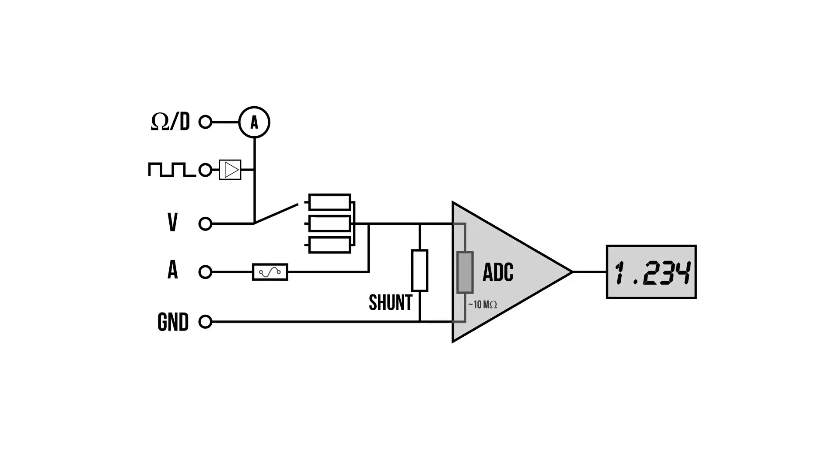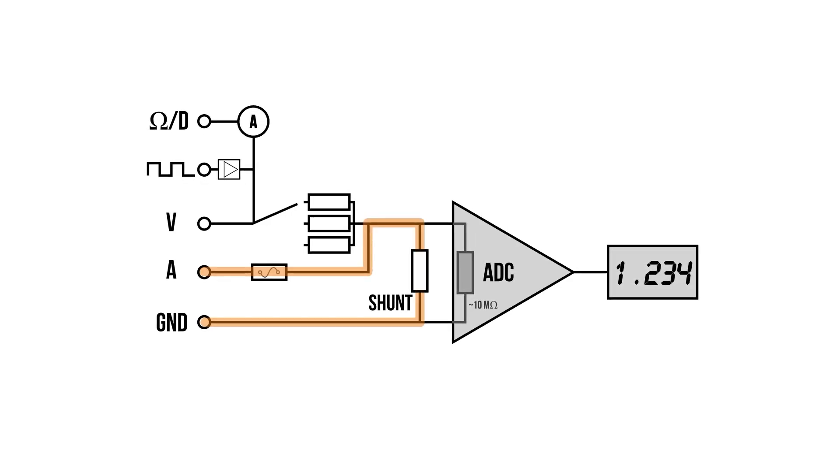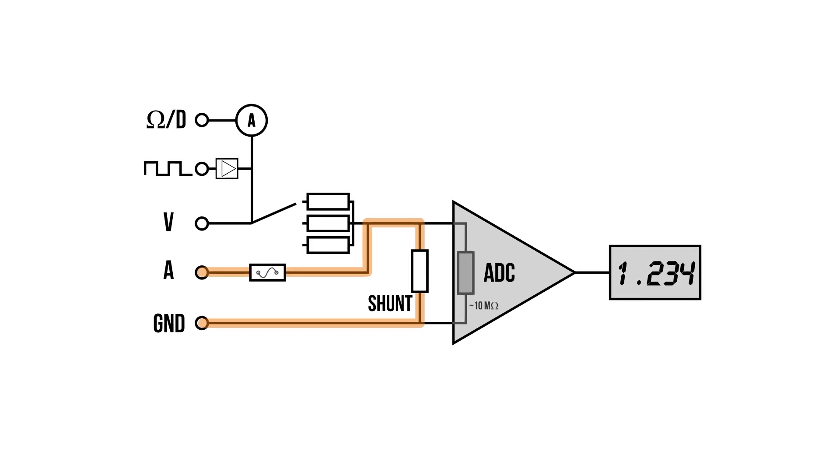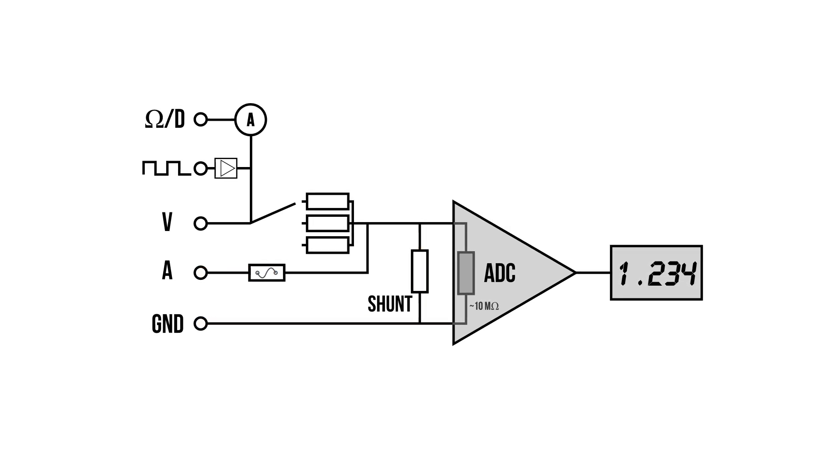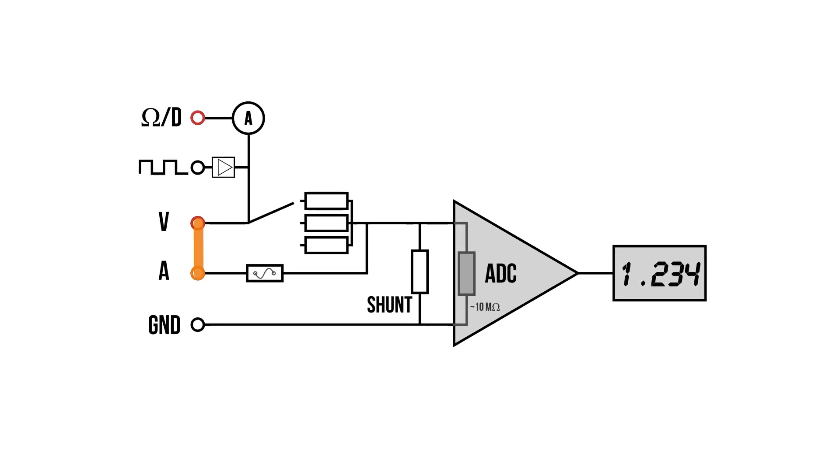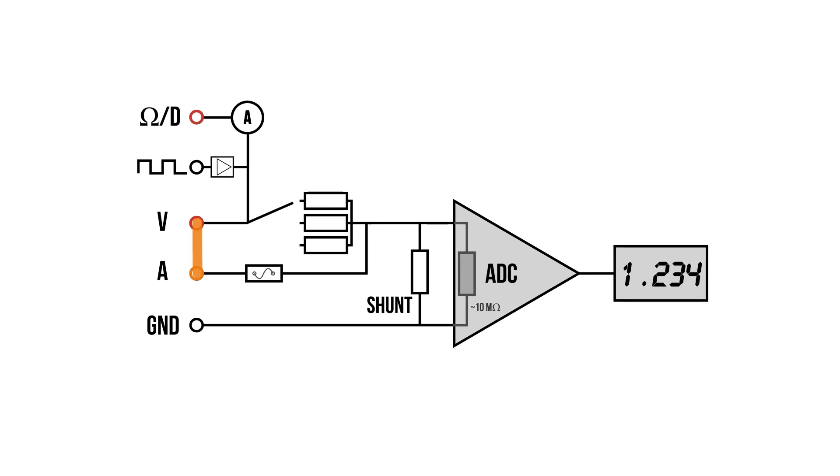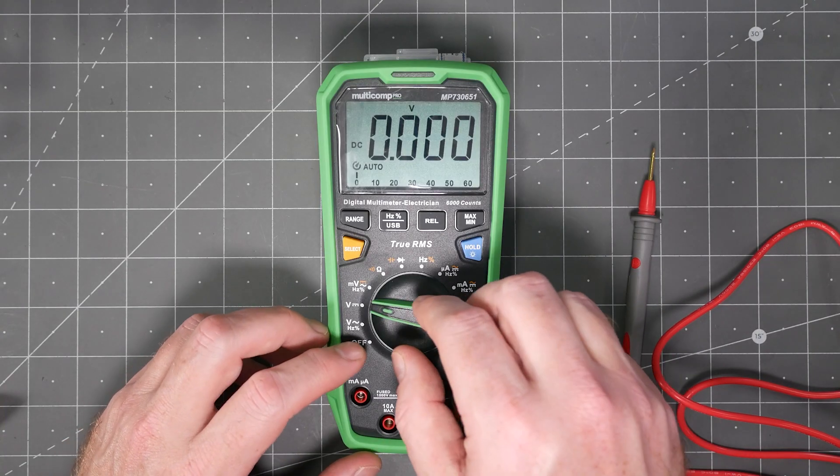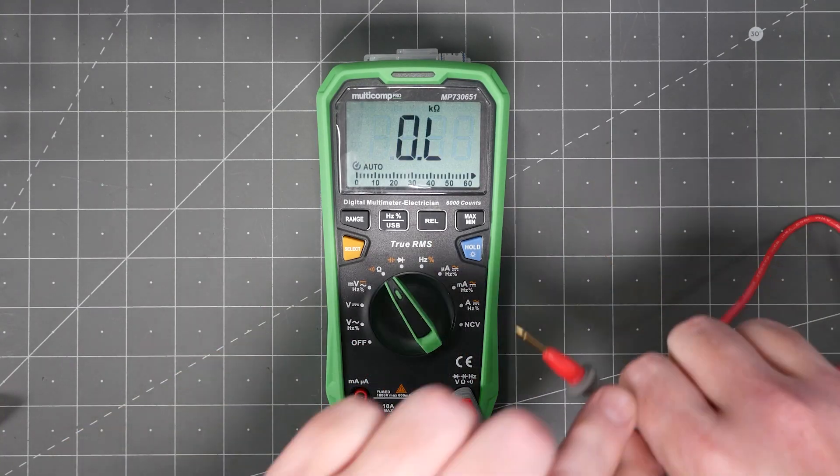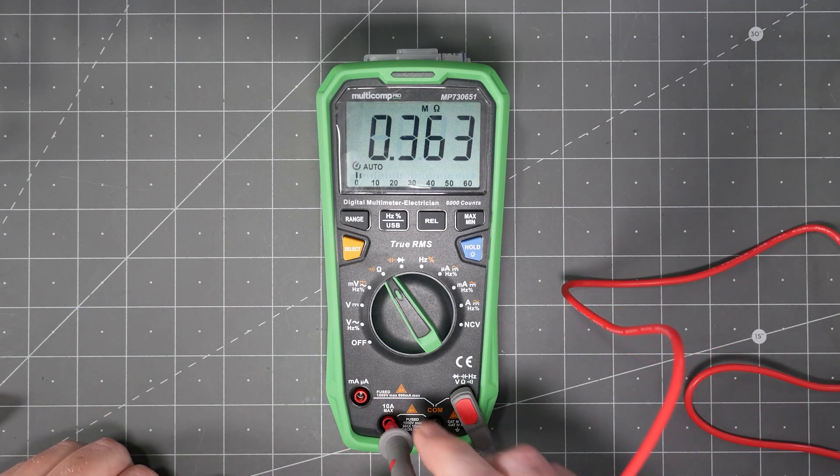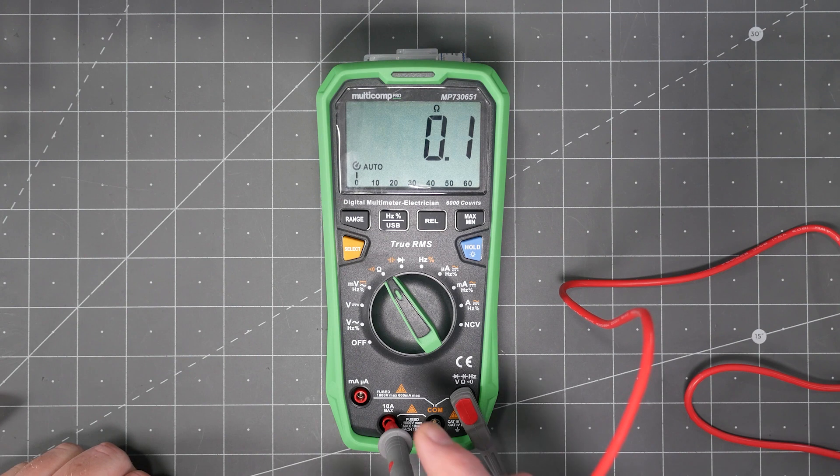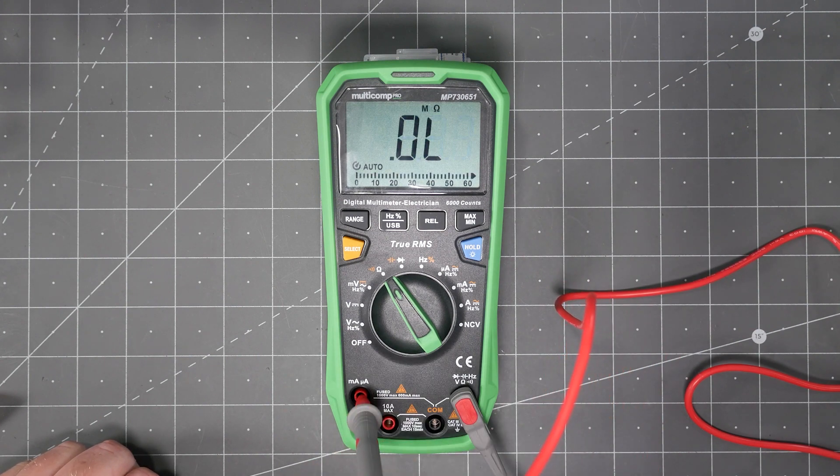When a DMM measures current, it measures the voltage across a very small shunt resistor. The fuse protects that resistor from overcurrent conditions. Even though there are separate terminals for voltage and current, they share a common point. If they are connected together, there should be a closed path. So, to test the fuse, put the meter into resistance mode and then stick the voltage probe into the current or amperage terminal. On this meter, the 10 amp socket measures almost 0 ohms and the 10 milliamp socket measures high resistance because it is a slow blow fuse.